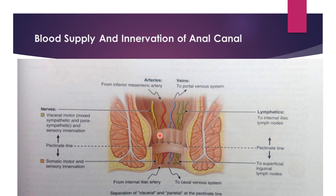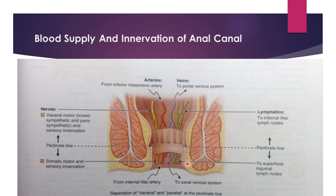For nerve supply, the upper portion from the hindgut receives autonomic innervation from the inferior hypogastric plexus and is pain-insensitive. The portion below the pectinate line — the ectodermal region — receives somatic and sensory innervation through the inferior rectal nerve, making it very sensitive to pain. For lymphatic drainage, above the pectinate line it drains into the internal iliac lymph nodes, and below the pectinate line it drains into the superficial inguinal lymph nodes — clinically important because metastasis of carcinoma of the anal canal differs between the upper and lower portions.